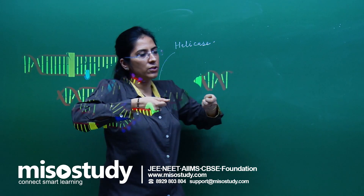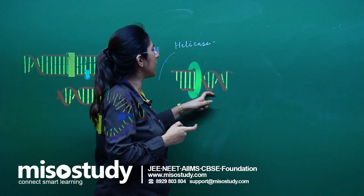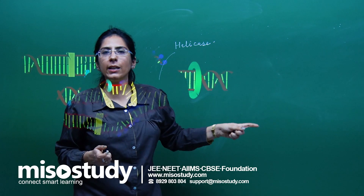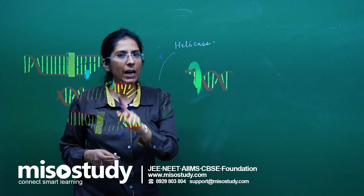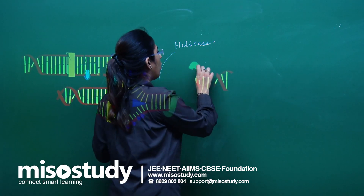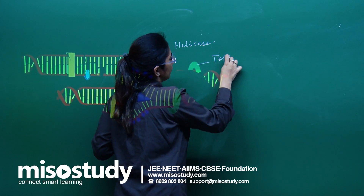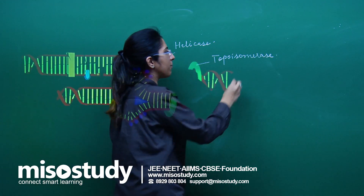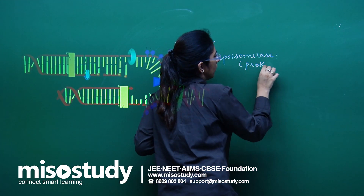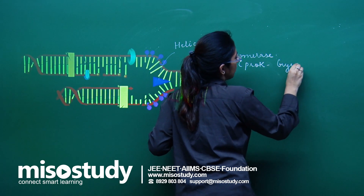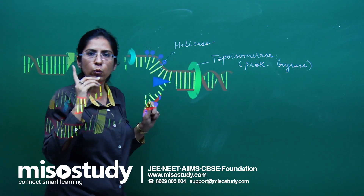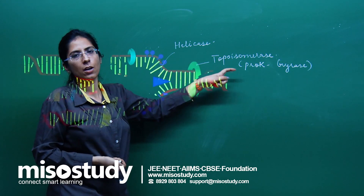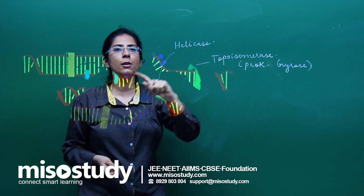Once you start separating the two strands that are wrapped around each other, supercoiling is initiated on the other side. These supercoils are relieved by another enzyme called topoisomerase. In the case of prokaryotes, this enzyme is specifically called gyrase.